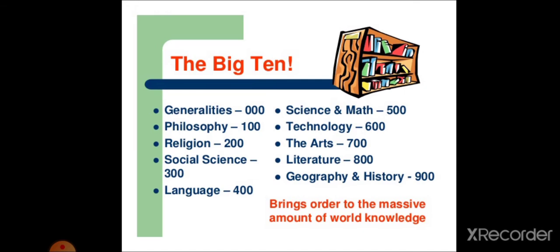These are the 10 basic classes of Dewey Decimal Classification. And these classes are further divided into 100 subcategories. And after that, it is again divided into 1000 sub-categories. We will discuss the 10 main classes in today's video.